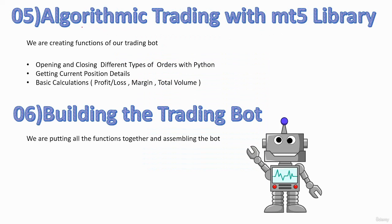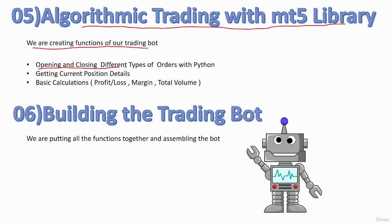The fifth section is algorithmic trading with the MT5 library. In this section, we are creating functions for our trading bot — functions for opening and closing different types of orders, getting details of current positions, and functions for basic calculations such as profit/loss, margin, and total volume.